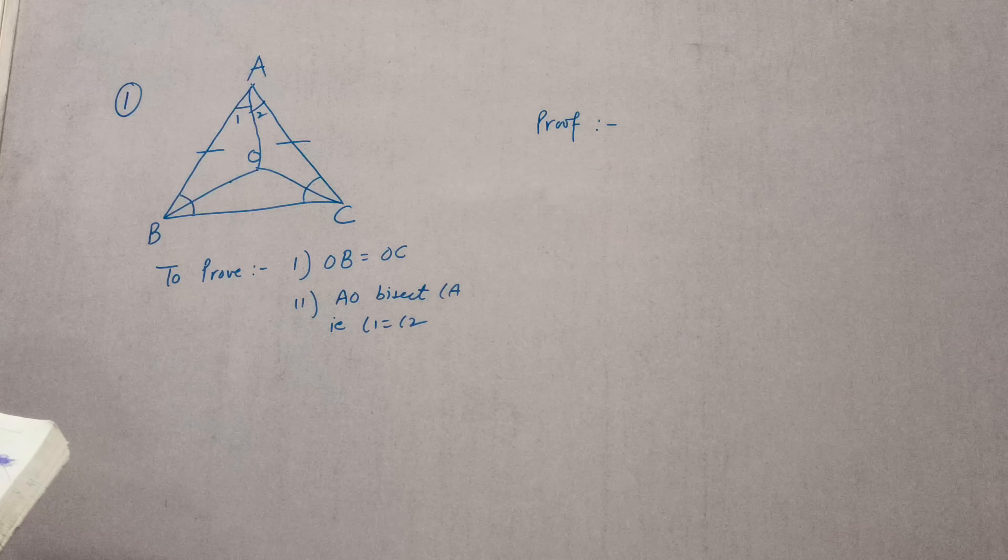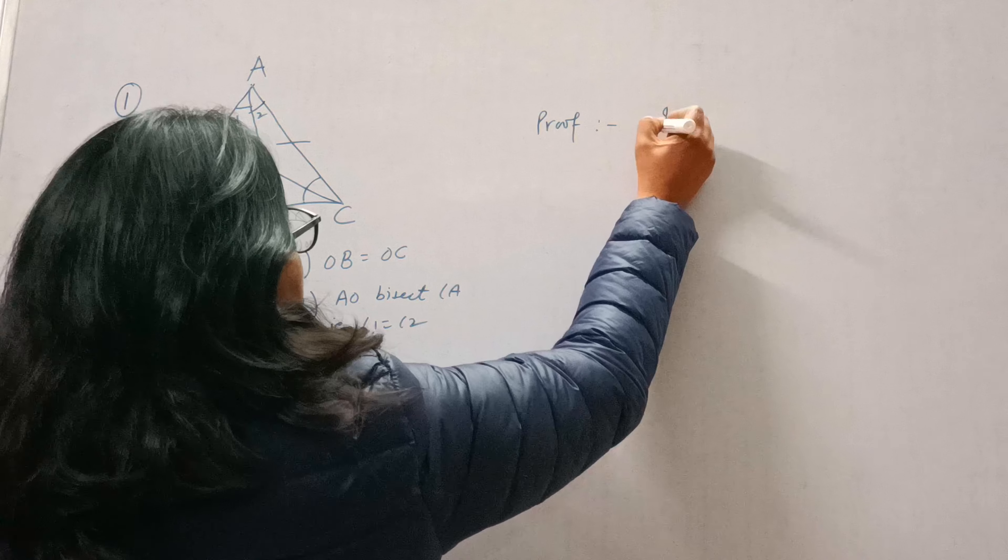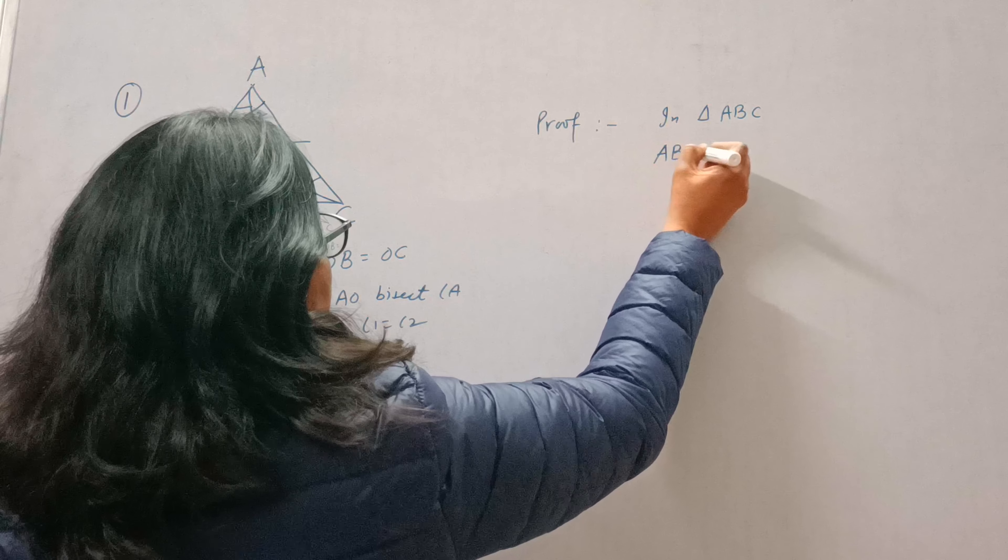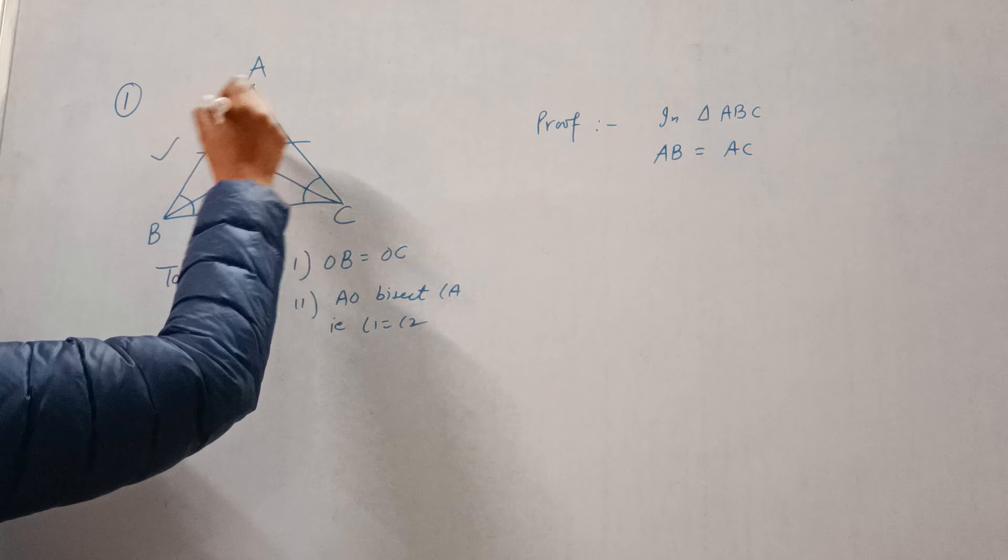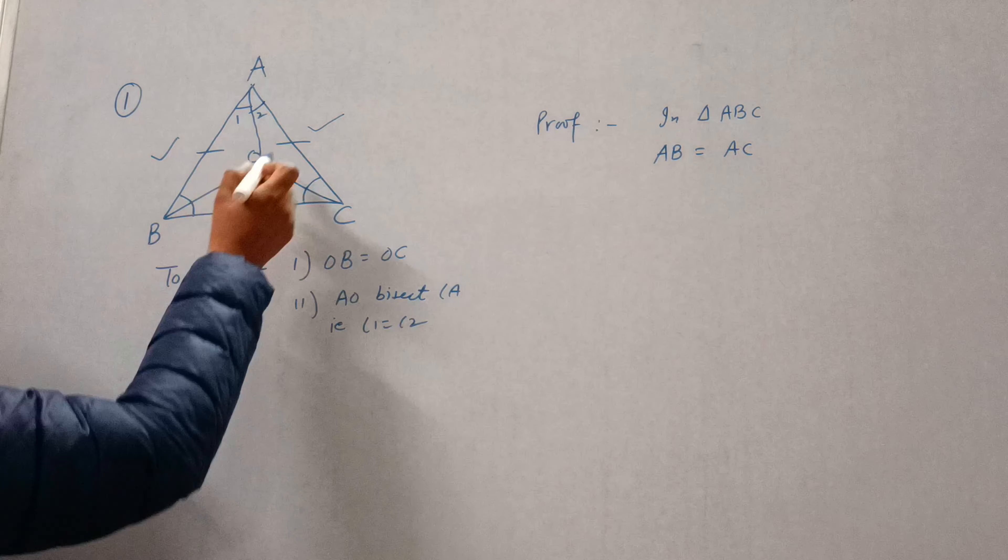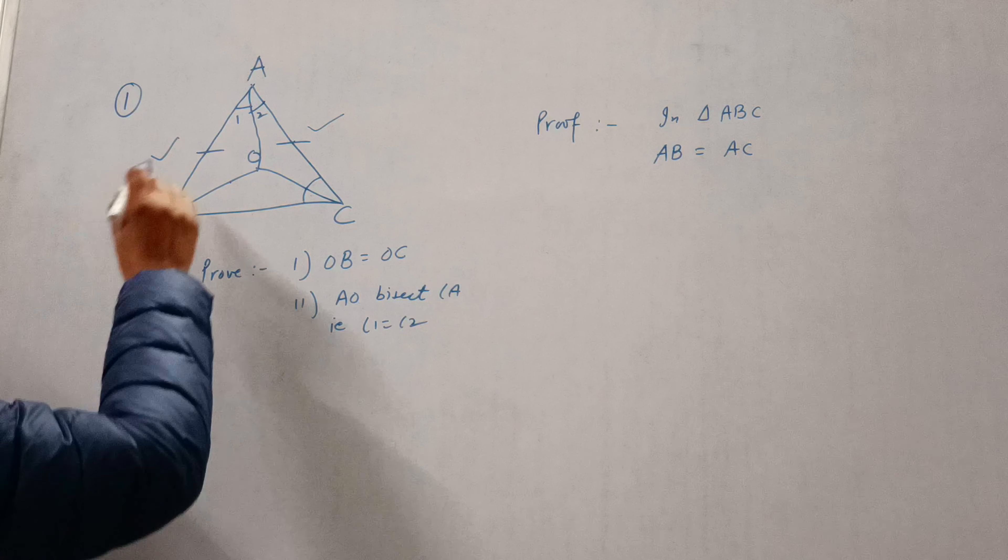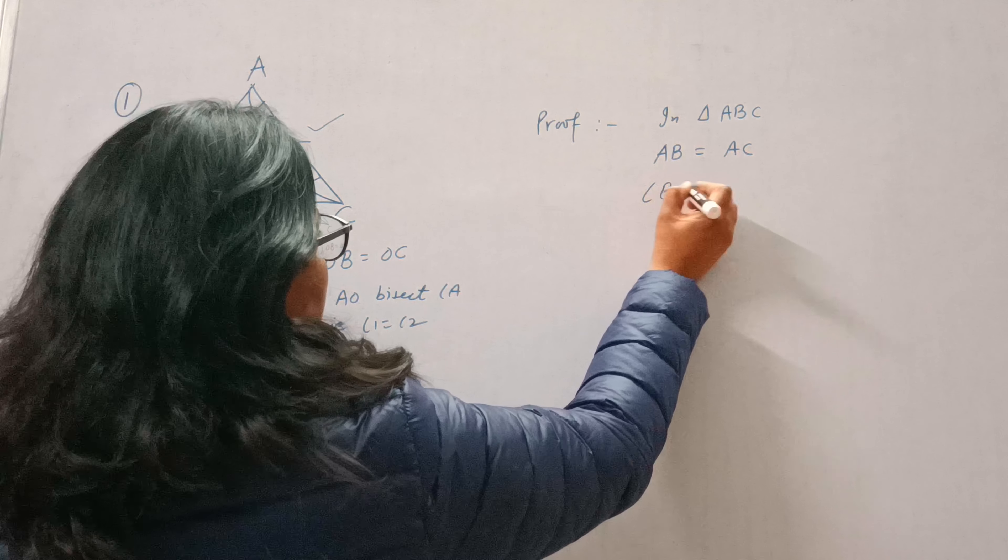Now see, in triangle ABC, AB is equal to AC. If in a triangle two sides are equal, then angles opposite to them are also equal. So if AB is equal to AC, then we can write angle B is equal to angle C.